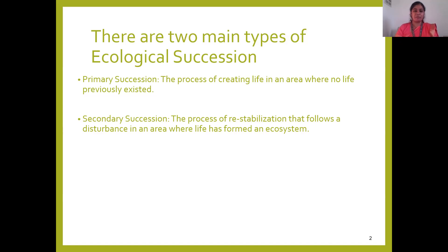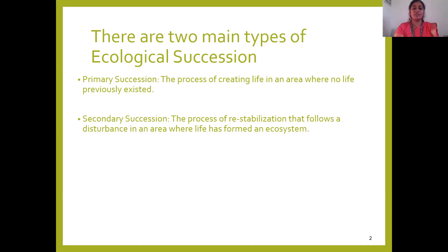Irrespective of whether it is primary or secondary succession, succession takes place in five different steps: nudation, invasion, competition, co-action, reaction being the fourth one, and the last one is stabilization.